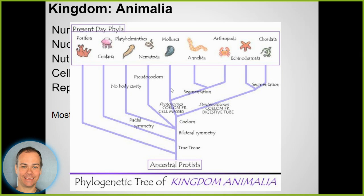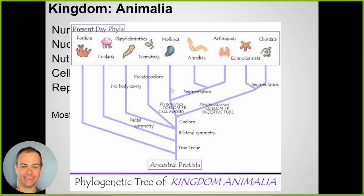Here are the main groups of animals: Porifera, Cnidaria, Platyhelminthes, Nematoda, Mollusca, Annelida, Arthropoda, Echinodermata, and Chordata. Those are the main groups - there are others scientists have identified, but we'll talk about some of these.